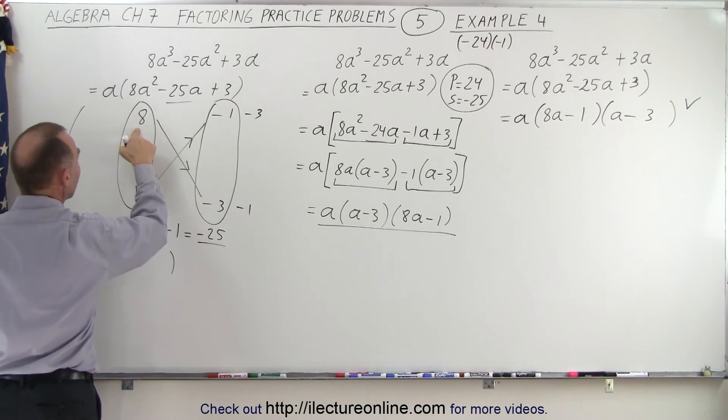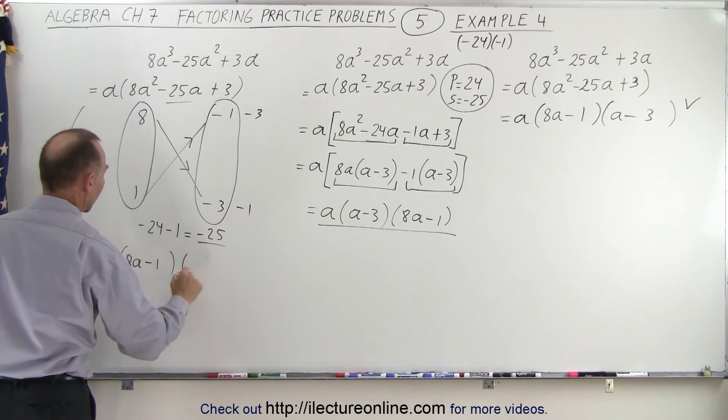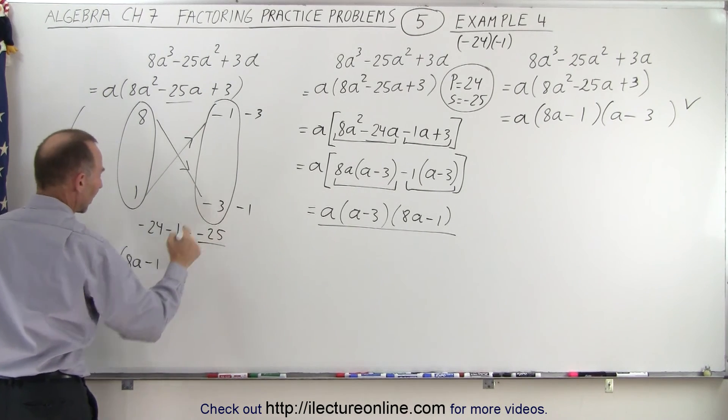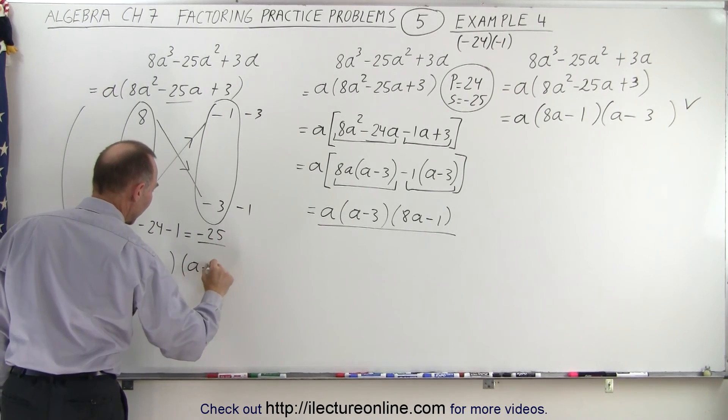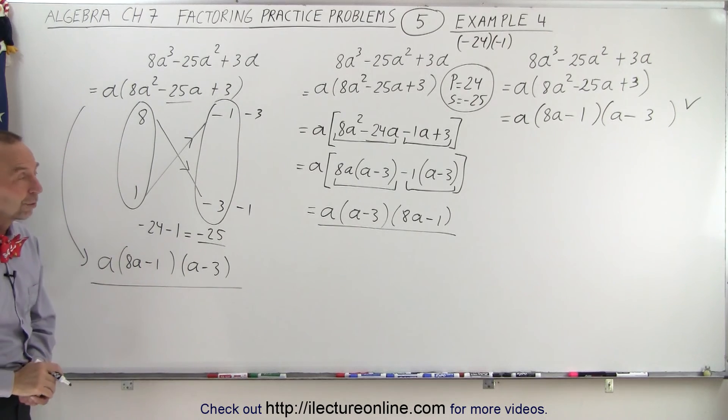So this can be factored as follows: a times 8a minus 1 times a minus 3. And notice, here's the factored form of our original problem.